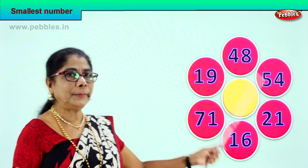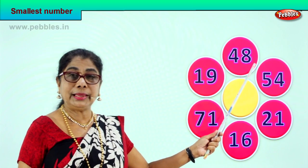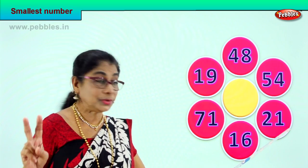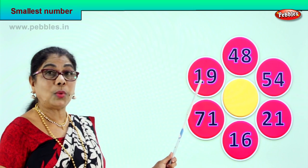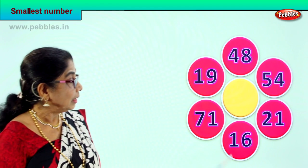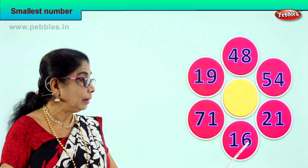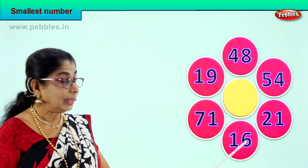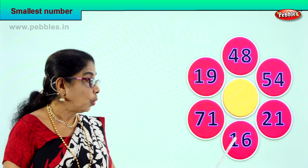Let's look at all these numbers in the tens place. 48 has 4 tens, 54 has 5 tens, 21 has 2 tens, 16 has 1 ten, 71 has 7 tens, and 19 has 1 ten. Now both 16 and 19 have 1 ten, but in the ones place 19 has 9 ones while 16 has only 6 ones. So 16 is the smallest.